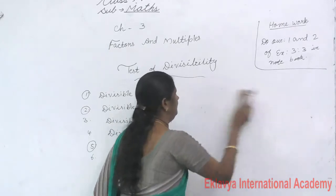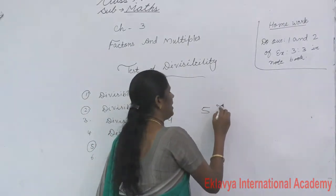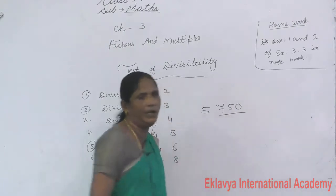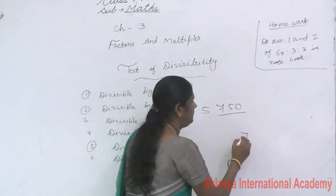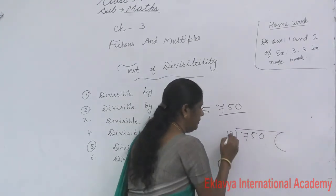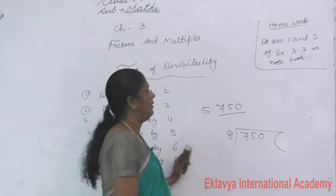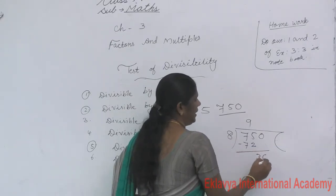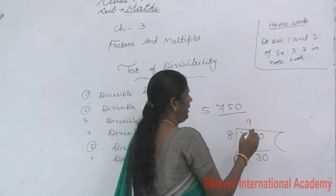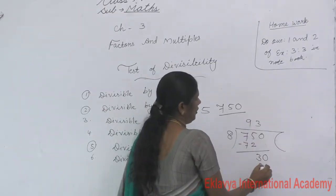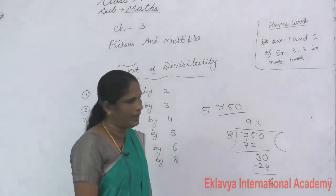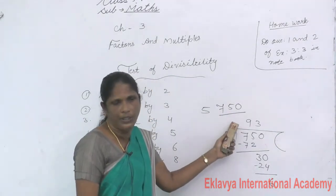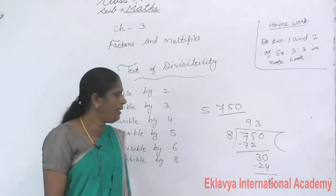One more example: 5750. The last 3 digits are 750. Divide 750 by 8: 8 × 93 = 744, and a remainder comes. Therefore 5750 is not divisible by 8.